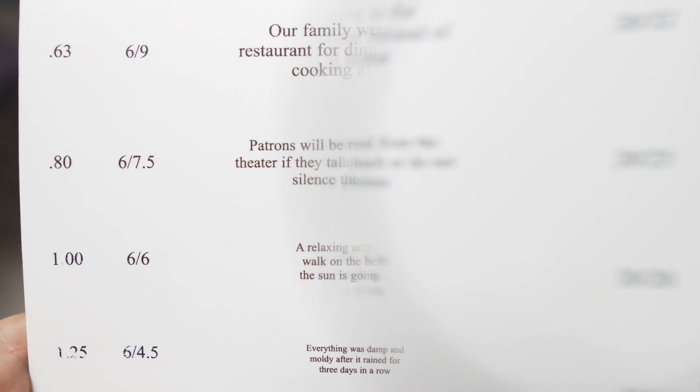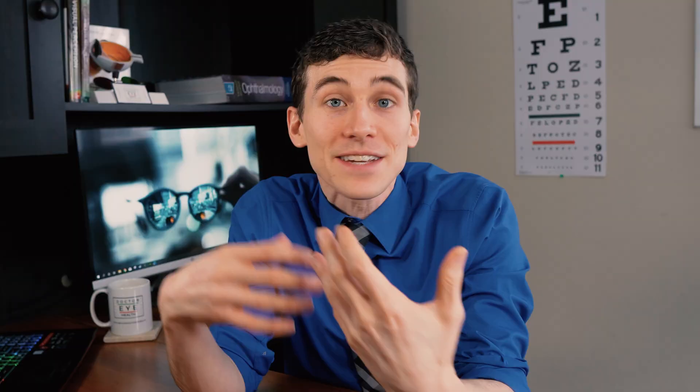Oftentimes amblyopia will develop due to uncorrected refractive error — we call that refractive amblyopia. That is where somebody will have an eye that just isn't being corrected with glasses or contacts at a young age. The difference between those two eyes will cause the brain to develop more neural connections for the better-seeing eye, leaving the weaker eye to fall behind. This can occur due to nearsightedness, farsightedness, and astigmatism.